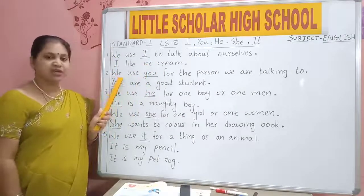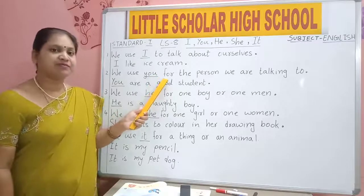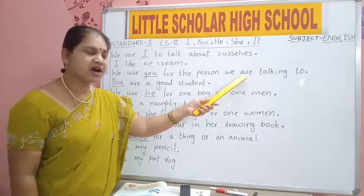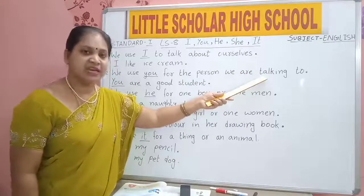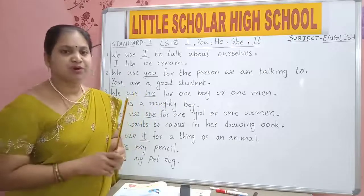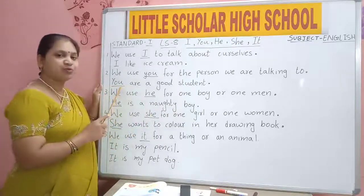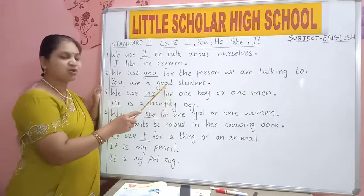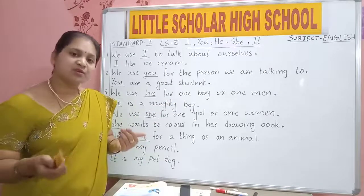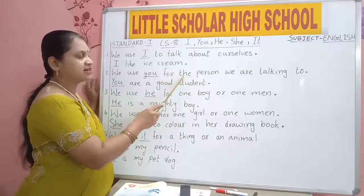We use YOU for the person we are talking to. Now, to whom I am talking? I am talking to you. Did you finish your homework? Did you complete this paper? So I will say YOU. You are a good student. You are listening to me. I am saying to you: you are a good student.